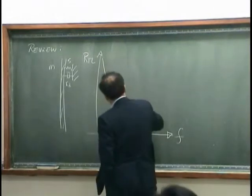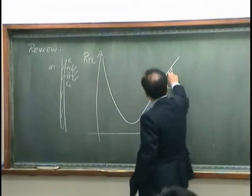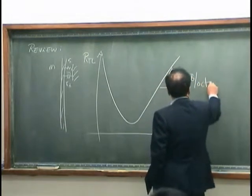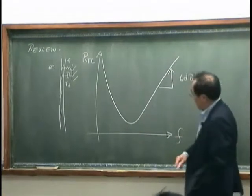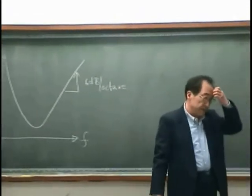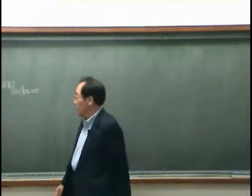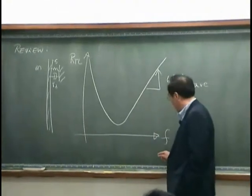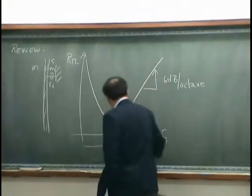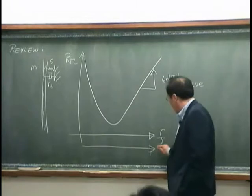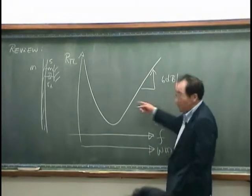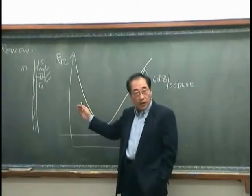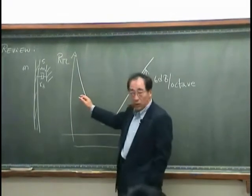That generally looks like this: a 6 dB per octave type graph. That essentially means that if we increase the mass twice or the frequency, then the transmission loss increases 6 dB. Similar behavior occurs over here.